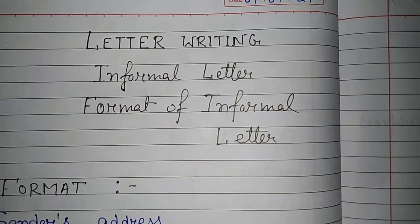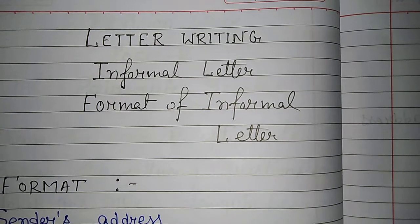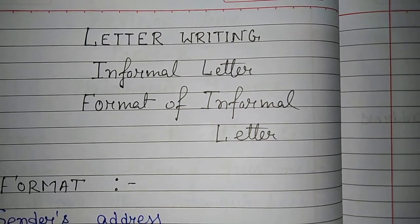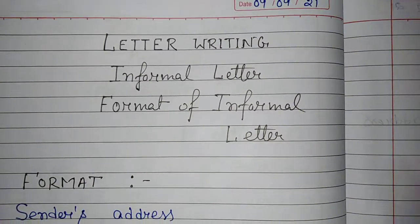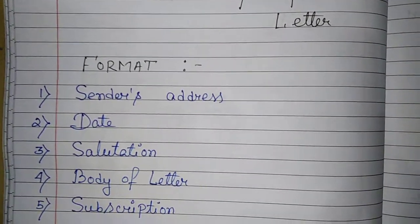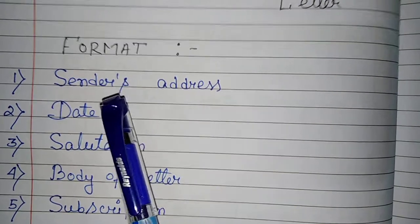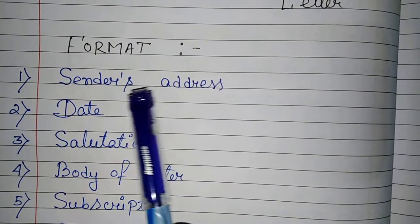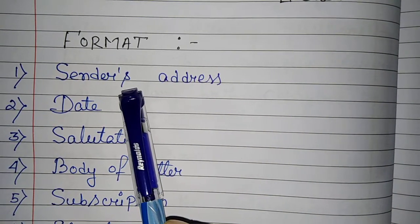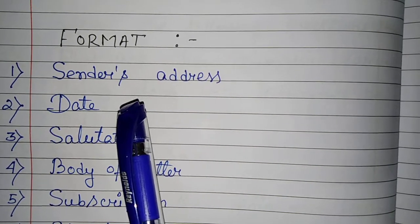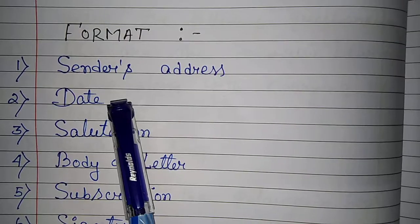Dear students, today we are going to discuss the format of an informal letter — how to write an informal letter. So how many parts are there and which parts are included? The first part is the sender's address. The sender is the person who is sending the letter. If I am sending a letter, I am the sender, so first you have to write the sender's address.